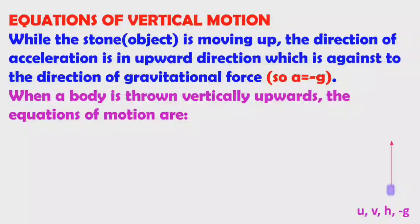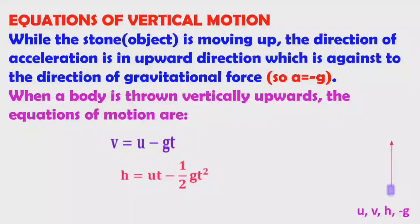By substituting these values into the equations of motion, we get: V equals U minus G T; H equals U T minus half G T square; V square minus U square equals minus 2 G H. These are the equations of motion when a body is thrown vertically upwards.